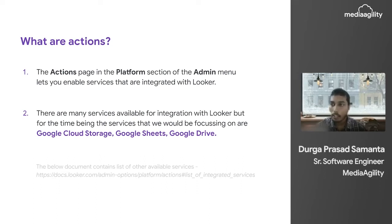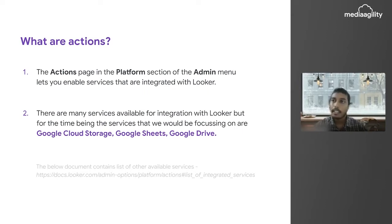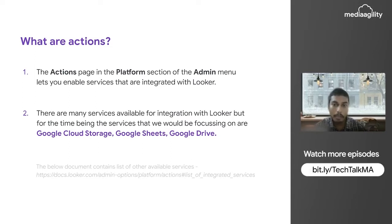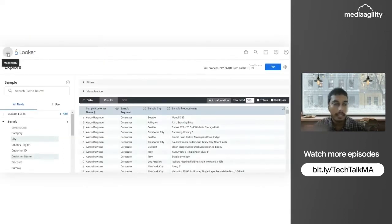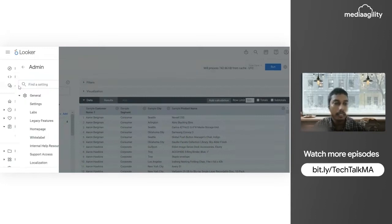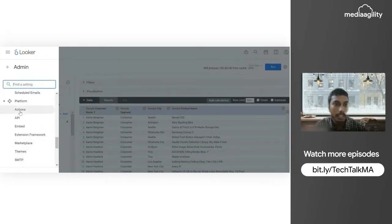The Actions page is in the platform section under the admin part. A Looker instance contains a set of services that can be made integrable with Looker. For this tech talk, I'll be focusing on Google Cloud Storage, Google Sheets, Google Drive, and BigQuery. I've also provided a link to the full list of integrated services. To integrate Google Sheets, go to Admin, then Platform, then Actions.